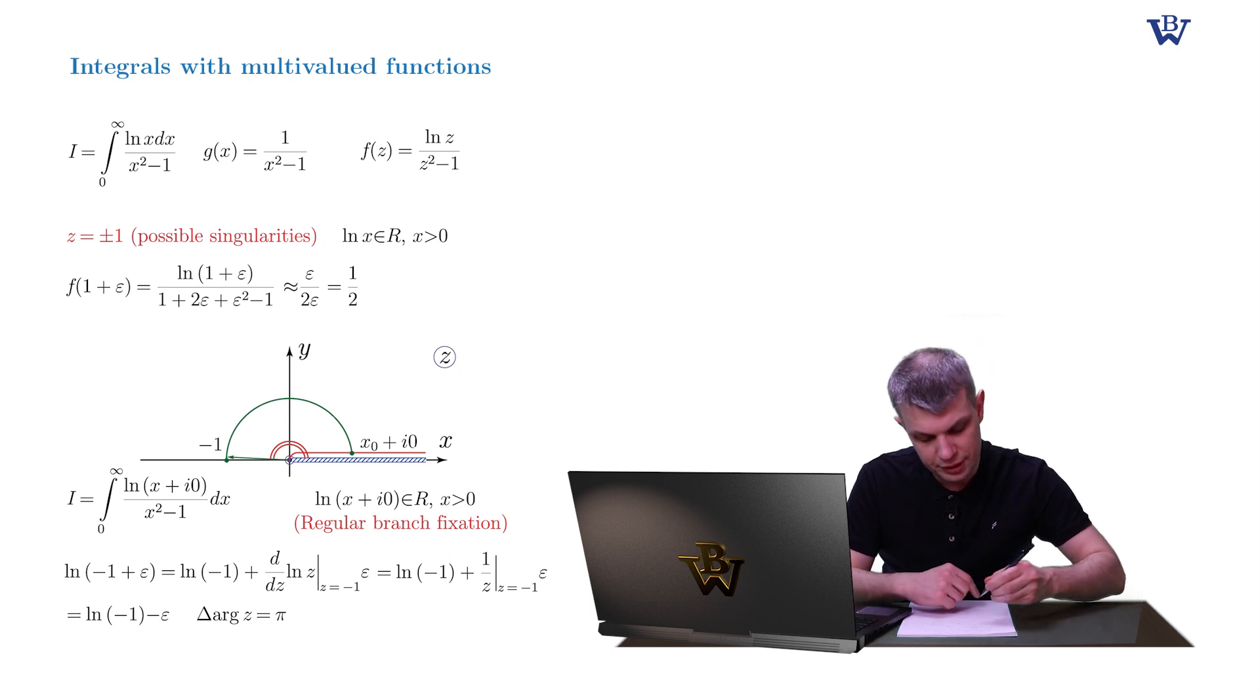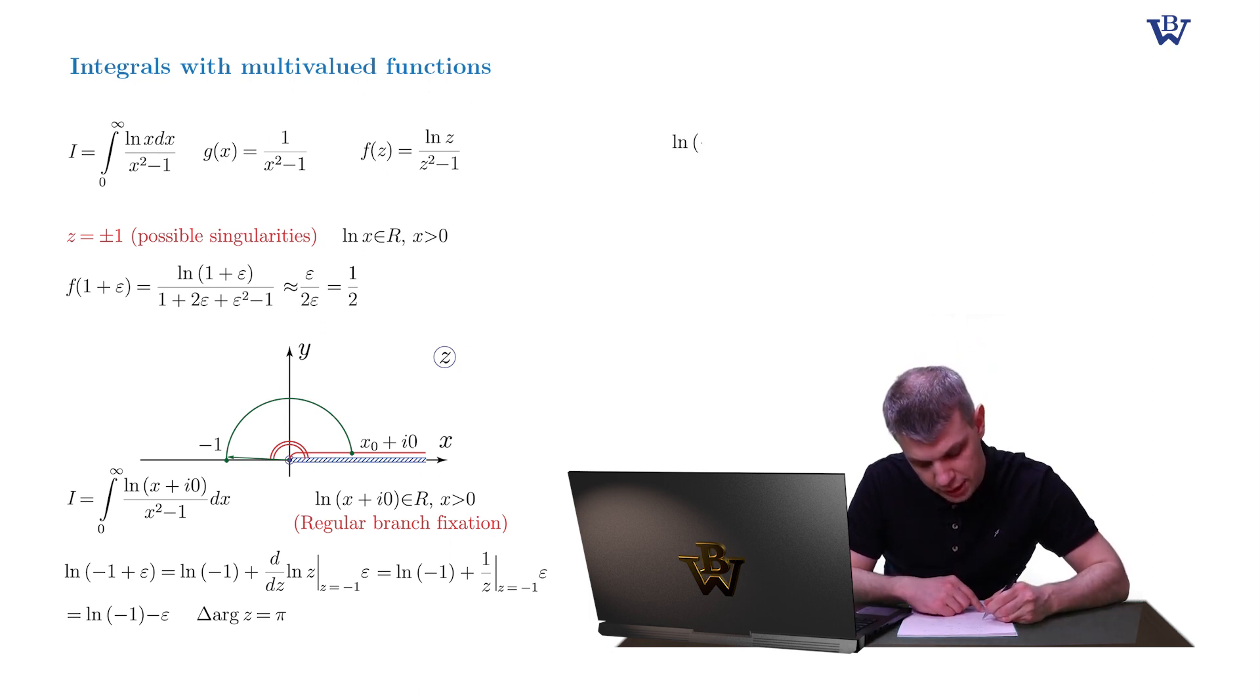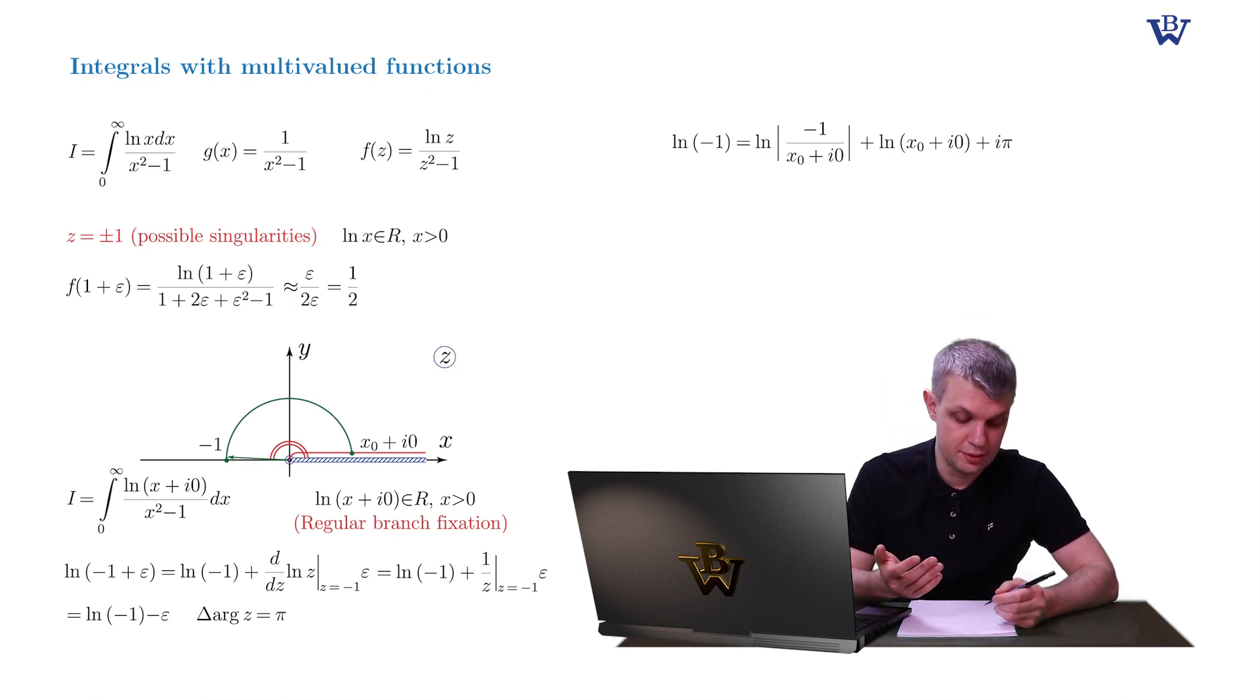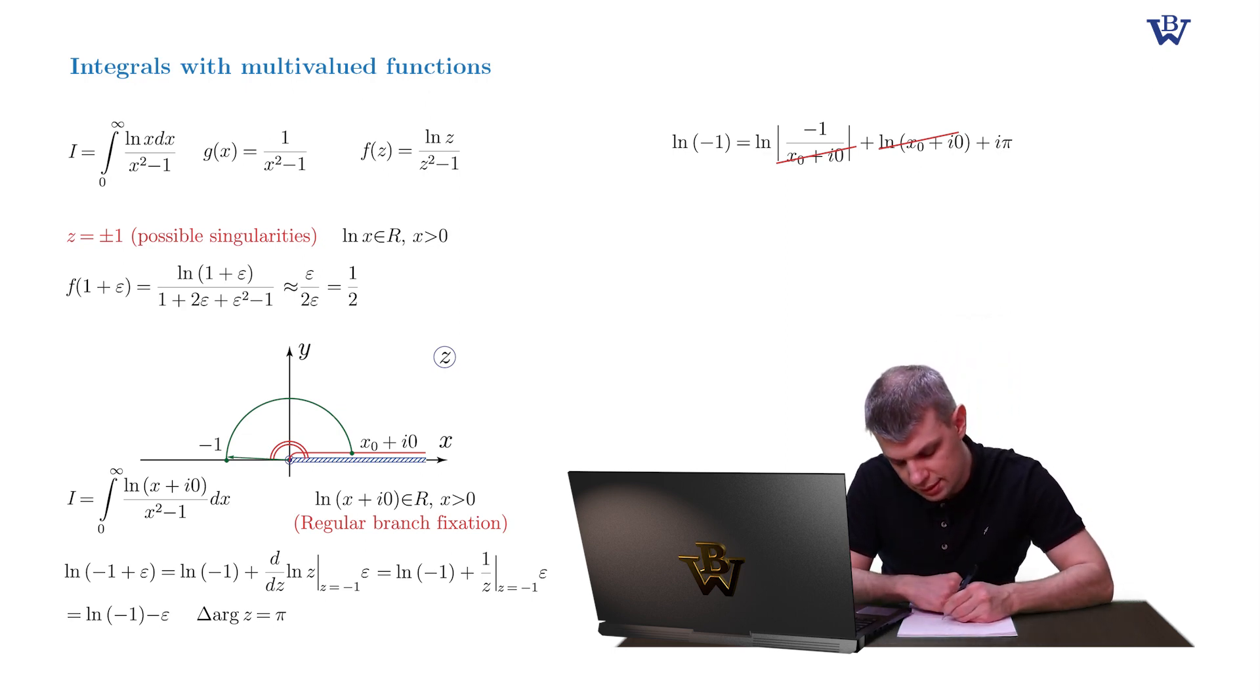And we write down the standard formula. Log of negative 1 equals log of the modulus of the ratio negative 1 and x0 plus i0, plus the log of x0 plus i0, plus i pi. We cancel out log of x0 plus i0. And the modulus of negative 1 is 1 and the log of 1 is 0. So we obtain predictable i pi.